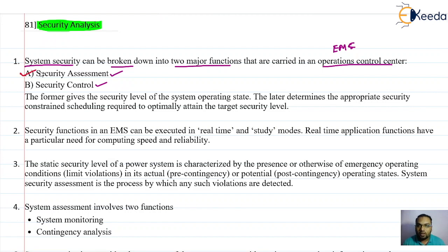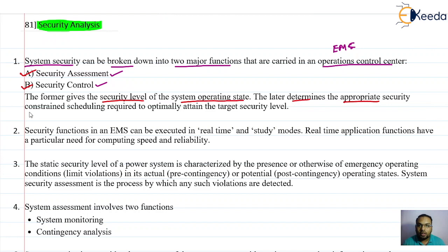The first function, security assessment, deals with the security levels of the power system — at what operating state it is operating, it gives us the security level. The second function, security control, determines the appropriate security constraint scheduling required to optimally attain the target security level.